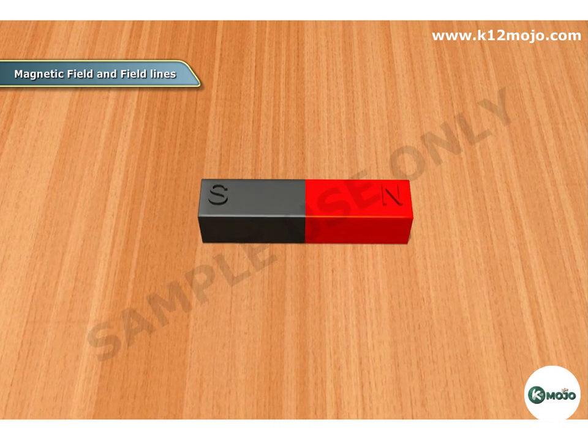To understand magnetic field lines, we can do an activity. For this, we need some iron filings, a bar magnet having north and south poles marked on it, and a cardboard.